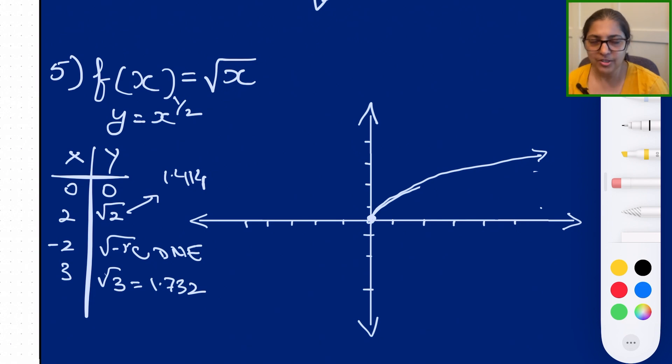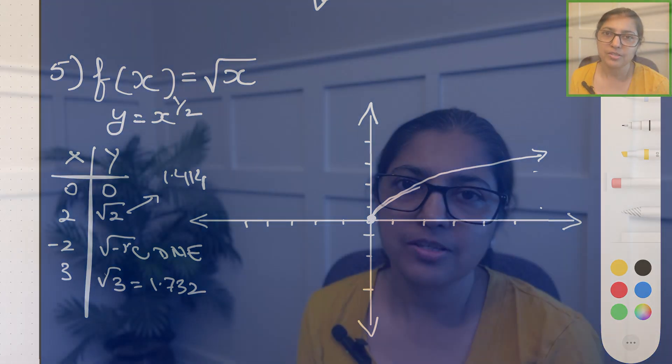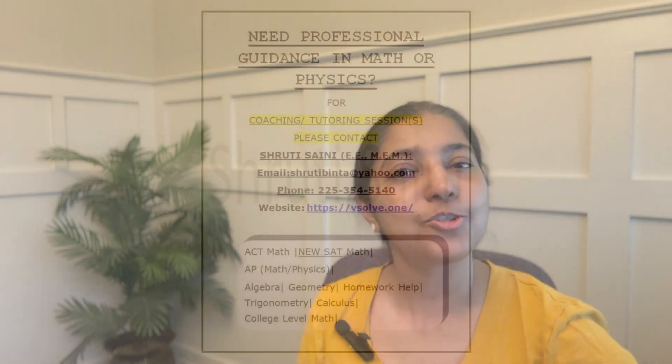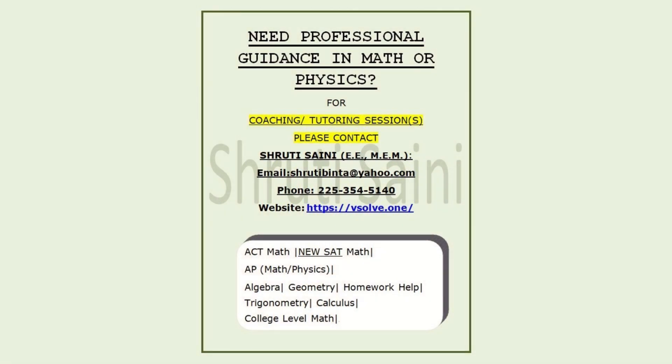So those are the five basic common sketches of basic functions: the straight line, absolute value V-shape, parabola U-shape, cubic S-curve, and square root. We can apply transformations to these equations and understand how the graph shifts left, right, up, down, or stretches vertically — that will be covered in the next video. If you enjoyed this presentation or have more questions, feel free to connect with me. See you on the next one!